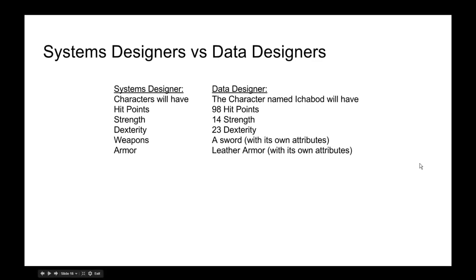To break it out further, we have things a systems designer will do versus what a data designer will do. A systems designer will determine characters have hit points, strength, dexterity, weapons, and armor. The data designer will come in and say, okay, there's a character named Ichabod who's going to have 98 hit points, 14 strength, 23 dexterity, a sword with its own attributes and numbers, and armor with its own attributes and numbers.